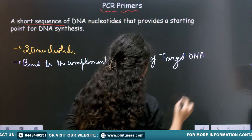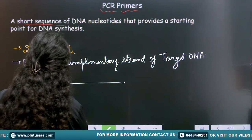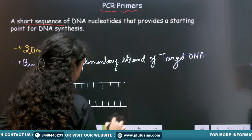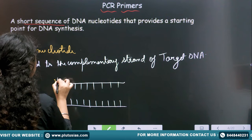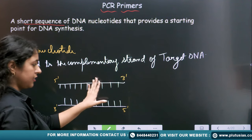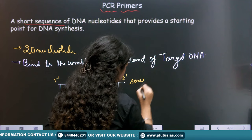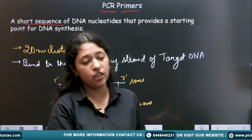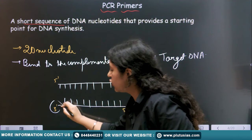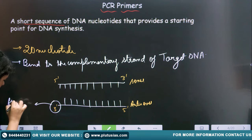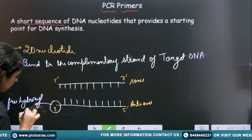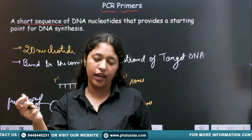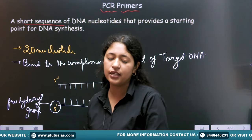Now these two strands are separated. This is the 5' to 3' strand — this is known as the sense strand — and this is the 3' to 5' antisense strand. The primer will get attached or bind to the side where there is a free 3' hydroxyl group. So the movement of primer will be from 5' to 3'. Because we have both strands, the primers are of two types.